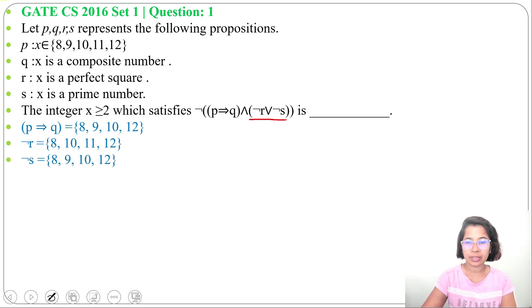Next we will find ¬R ∨ ¬S. The union of these two is {8,9,10,11,12}, all X values.